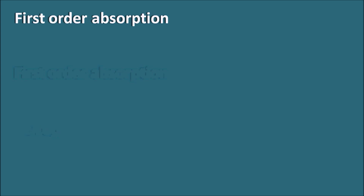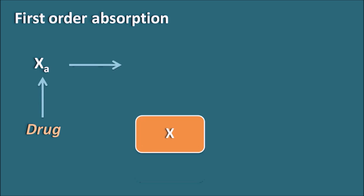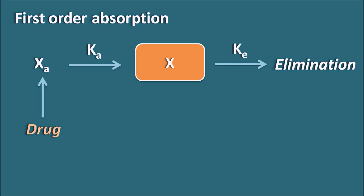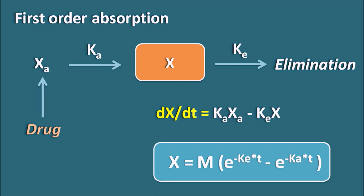For first-order absorption, the drug is administered to the extravascular site (amount XA), enters systemic circulation (amount X), and is eliminated. The rate equation dx/dt equals rate of input minus rate of output, written as Ka·XA minus Ke·X, where Ka is the absorption rate constant and Ke is the elimination rate constant. Note that XA is the amount available for absorption and X is the amount available for elimination. Integrating this equation gives: X equals M times (e to the power of minus Ke·t minus e to the power of minus Ka·t).